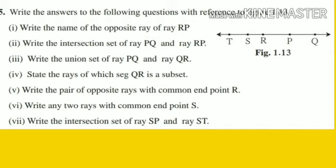Next, question number 5. Write the answers to the following questions with reference to the figure. One line is given to you, and you have to observe this line and answer the questions given below. The first question is: write the name of the opposite ray of RP.